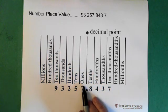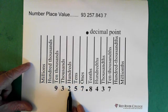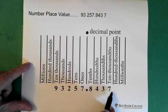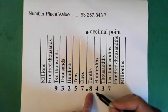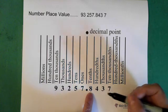For example, if this number is 93,257.8437, this point here is our tenths. So just one under the decimal, right?